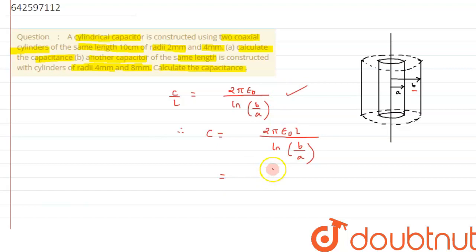So from here if we resolve further, we can say this can be written as L over 2, and here it will become 1 over 4π epsilon 0 ln of B by A.